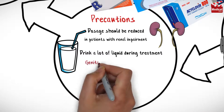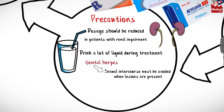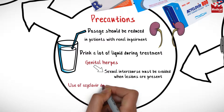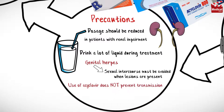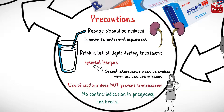In case of genital herpes, sexual intercourse must be avoided when lesions are present. Note that use of acyclovir does not prevent transmission. There is no contraindication in pregnancy and breastfeeding.